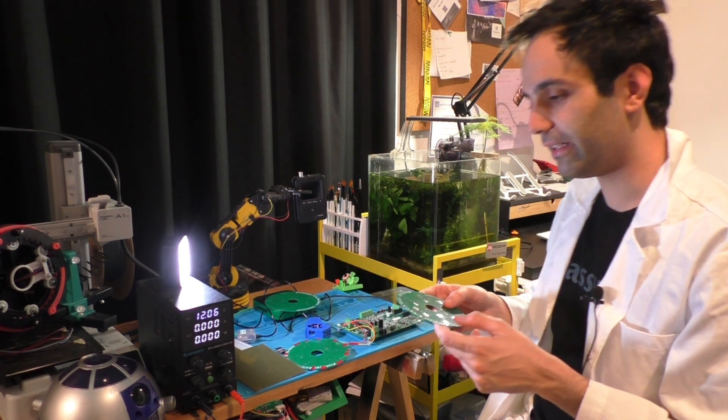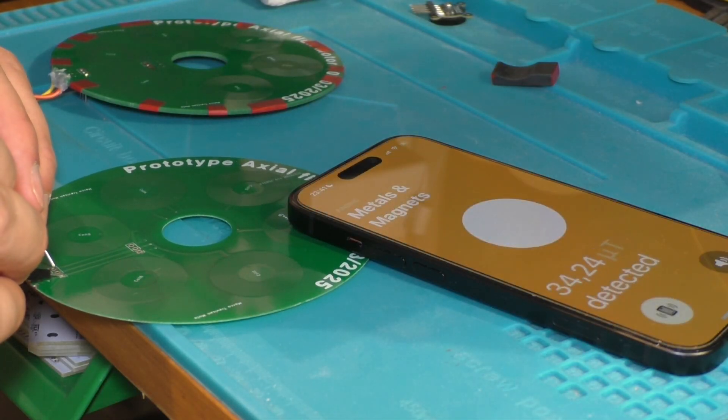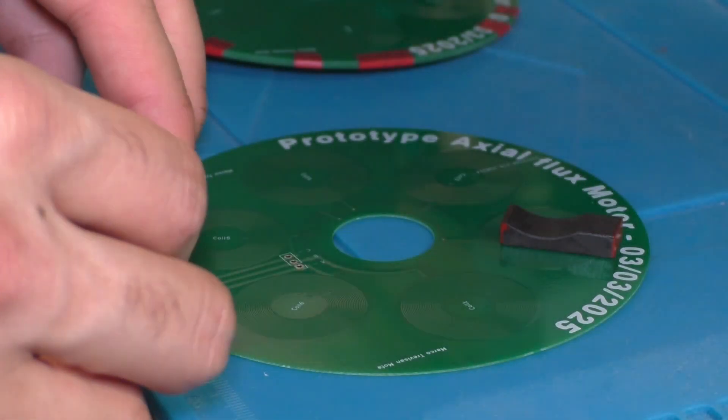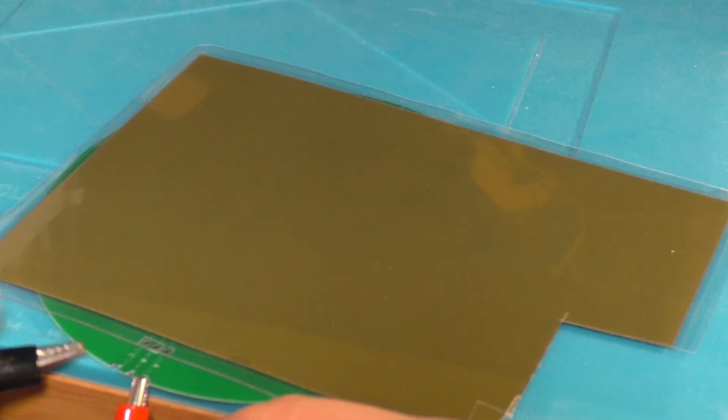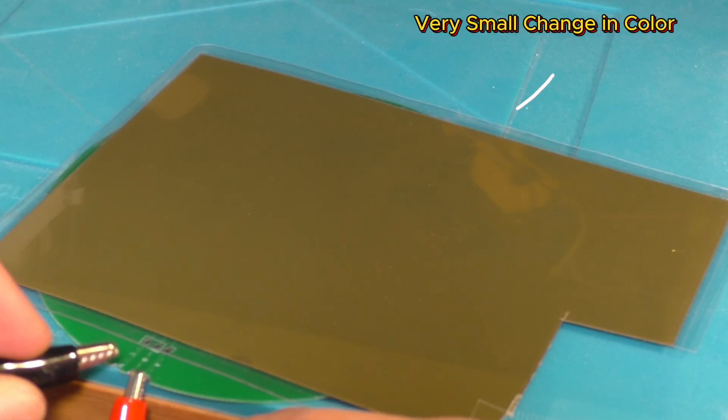So, the first thing I did was to just connect two of the three phases to direct power supply, and it forced a certain current. At the same time, I placed the magnetic field and I couldn't see anything.